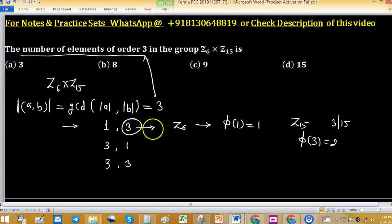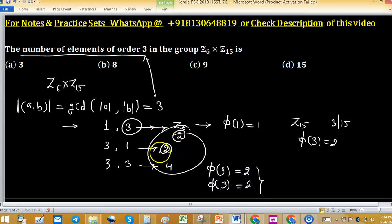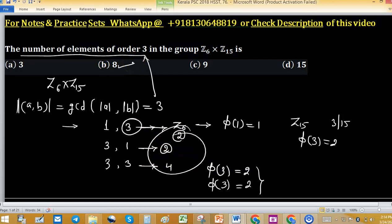So for first possibility, when order of a is 1 and order of b is 3, total 2 elements will be there. Similarly you can find 2 elements here, and 4 elements because phi of 3 is 2, so phi 3 into phi 3 you will get 4. So total how many elements? 8 elements will be of order 3 in this direct product.